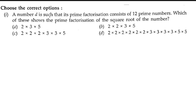A number d is such that its prime factorization consists of 12 prime numbers. Which of these shows the prime factorization of the square root of the number? So here they have given a number d whose prime factorization consists of 12 prime numbers, so we have to check these options.